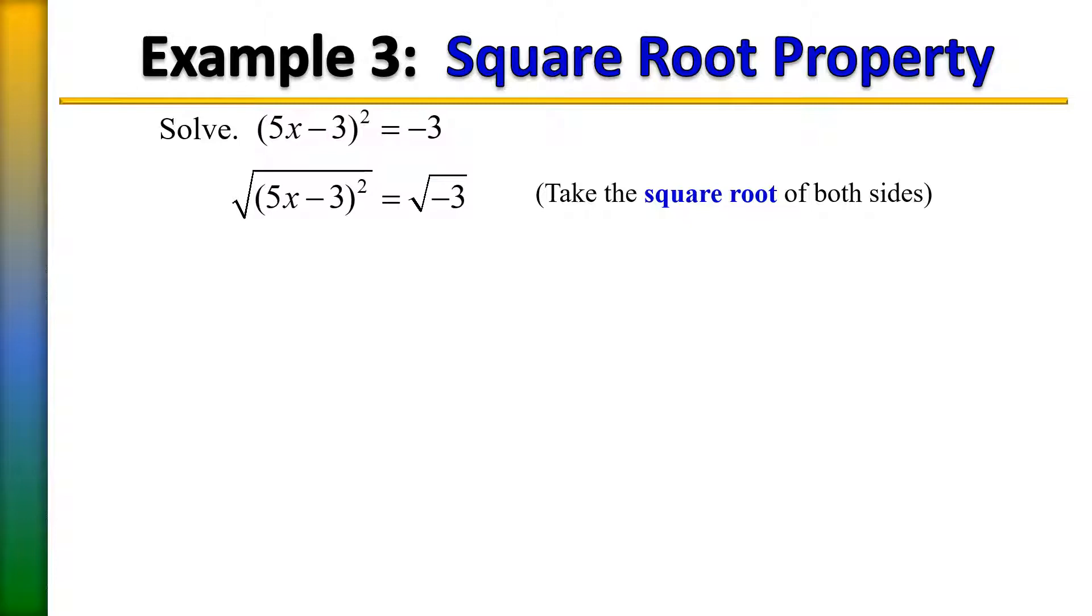On the right side we have the square root of negative 3, which as you recall is not a real number - it's an imaginary number. We can extract the negative 1 from this negative 3, and what it would leave you with is plus or minus i radical 3.